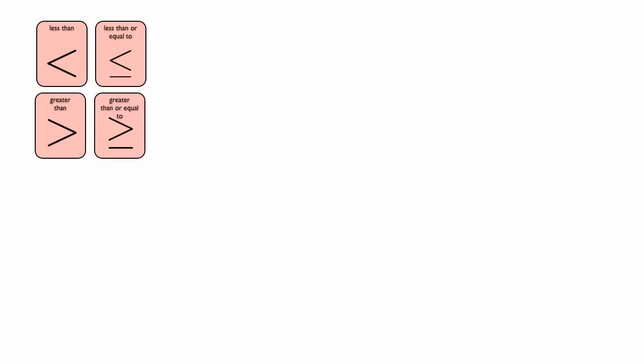The less than or equal to signs have a line on the bottom so that it kind of looks like an equal sign. In fact, it's a combination of the less than sign and an equal sign, which is exactly what the symbol means.